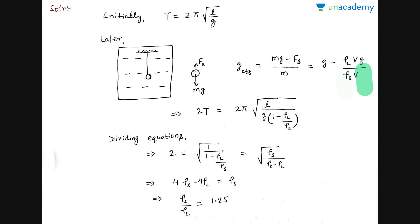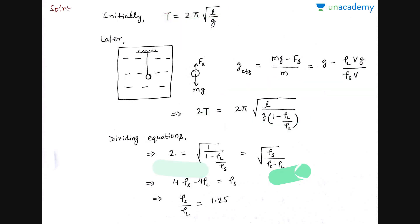In this case, the time period becomes T' = 2π√(L / g_effective), where g_effective = g(1 − ρ_L/ρ_S). We are told the time period doubled, so T' = 2T. Setting up the ratio T'/T and squaring both sides, we get ρ_S/ρ_L = 1.25. So the specific gravity (relative density) is 1.25.